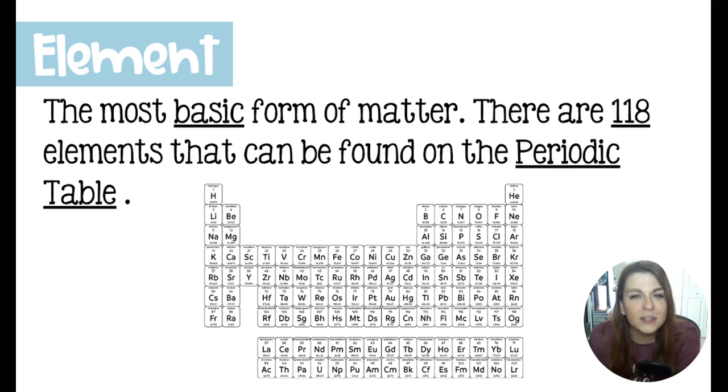Now the most basic form of matter is called a chemical element. And we have 118 of them on the periodic table. This is as basic as it gets. If you can think of matter kind of like a language, the letters of the alphabet would be the elements. The words that they make are called compounds. This would be like your alphabet. These are the building blocks of everything that is matter.